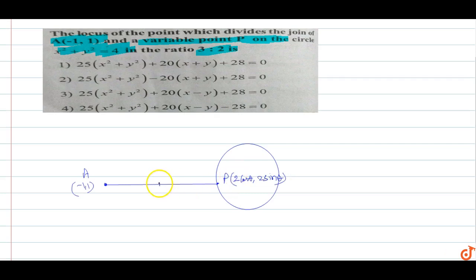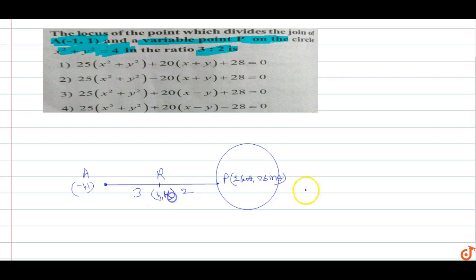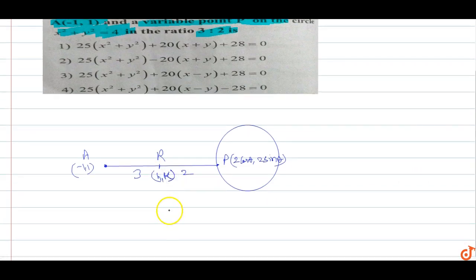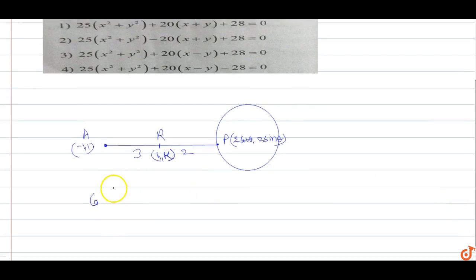Now, any point R which divides the variable point P and A in the ratio 3:2 — we need to find the locus of R. Let the coordinates of R be (h, k). We find coordinates of R when R divides AP in the ratio 3:2.